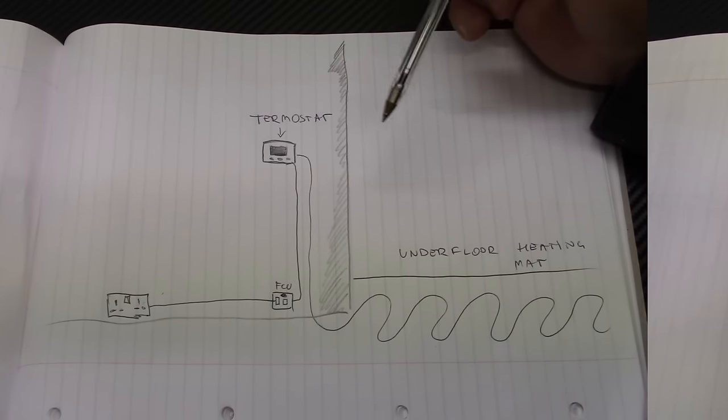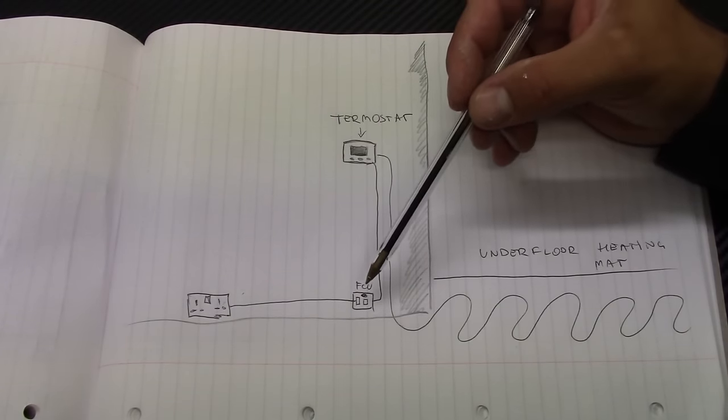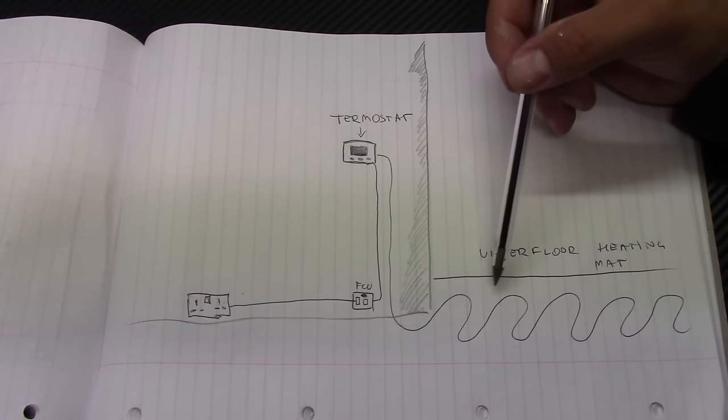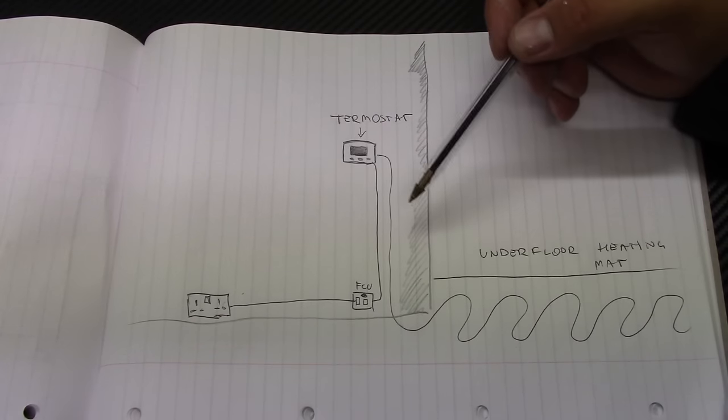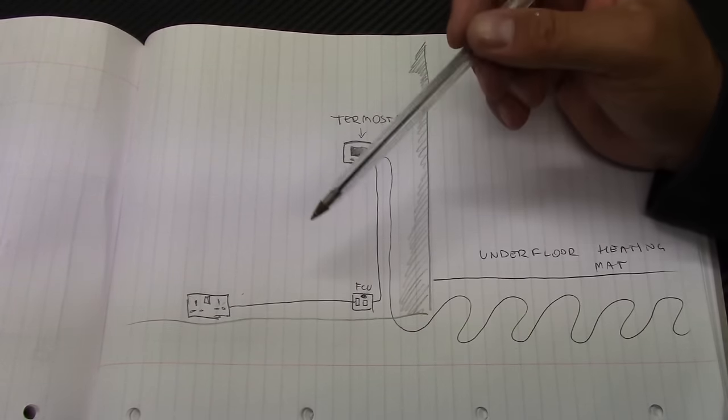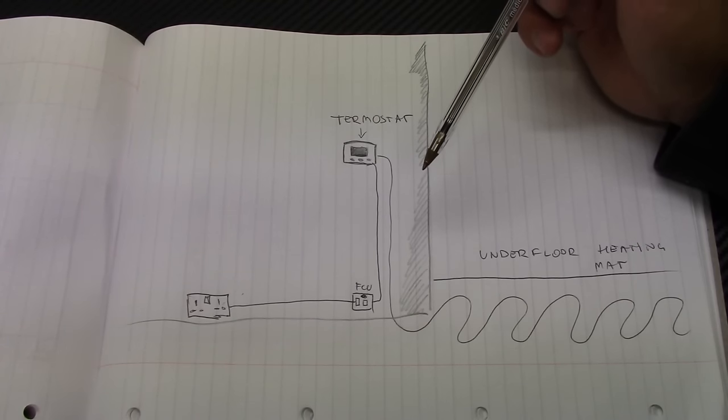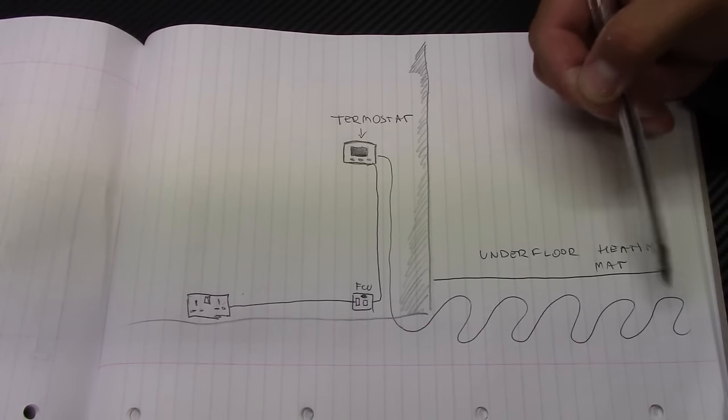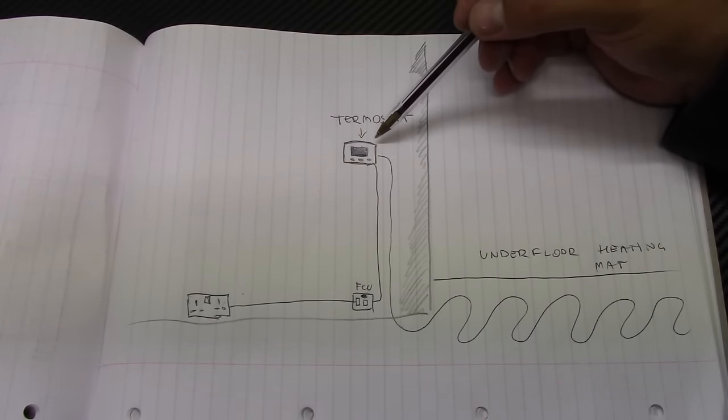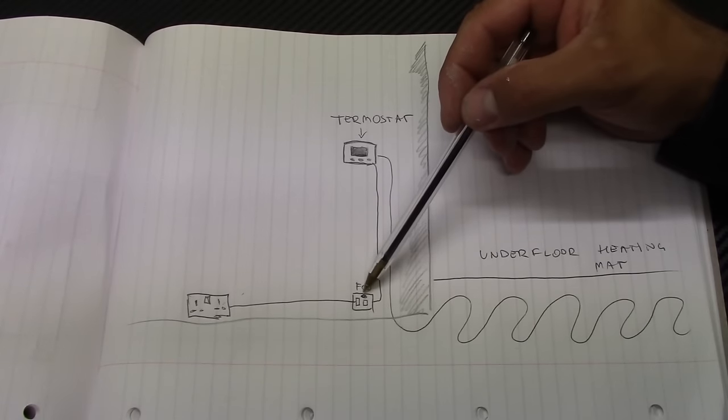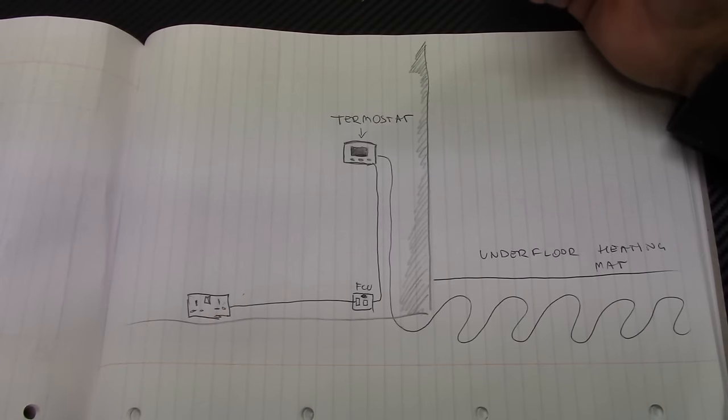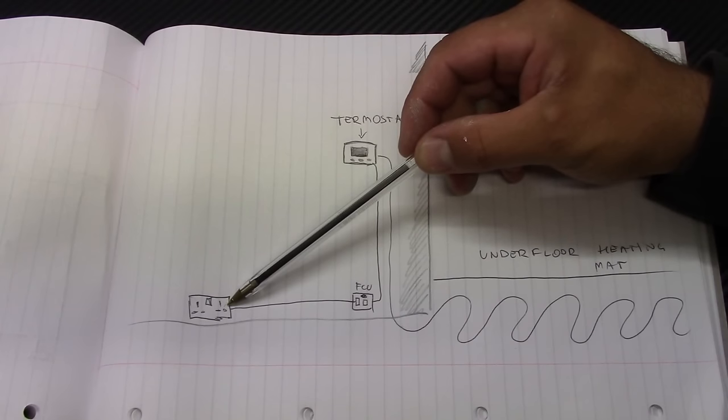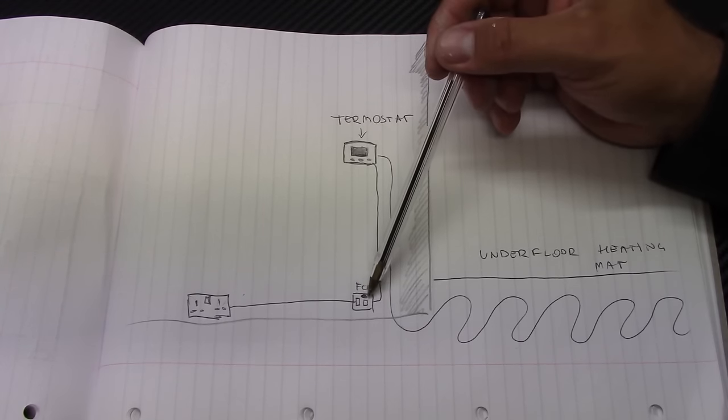Another situation where you need to install FCU is where you install underfloor heating mat. And you take the power straight from the socket outlet instead of the consumer unit. So here is our underfloor heating mat. Here is a thermostat for the mat or controller. Here is the FCU and the socket outlet.